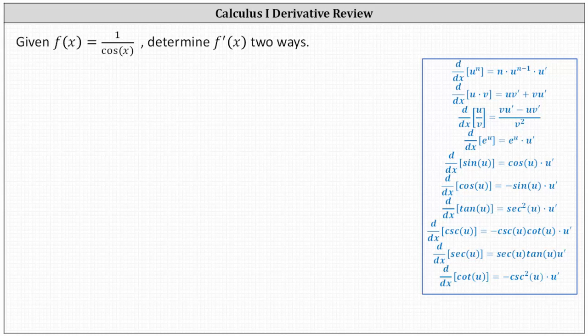We are given f of x equals one divided by cosine x, and we're asked to determine the derivative function f prime of x two ways.